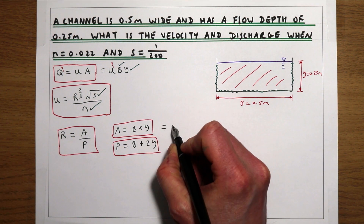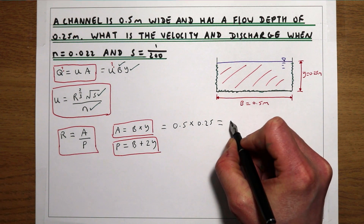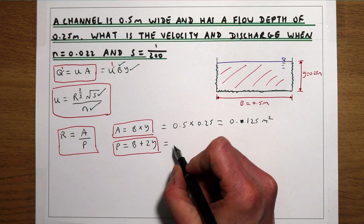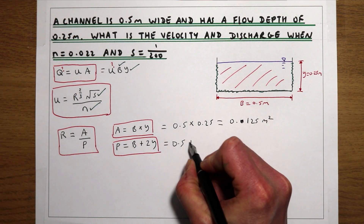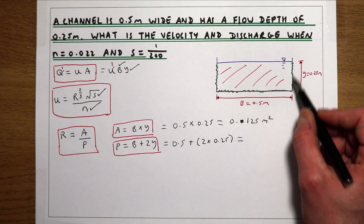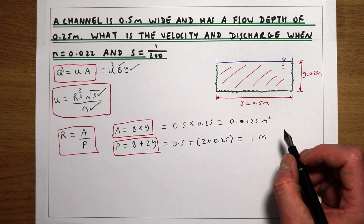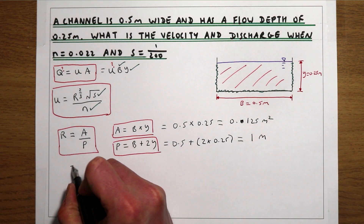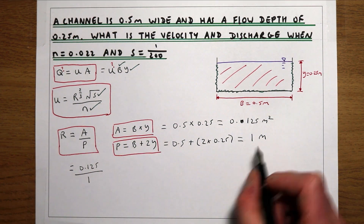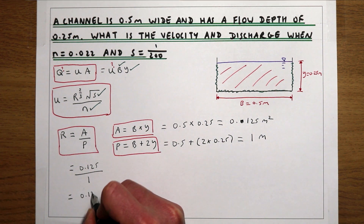The cross-sectional area is the width times the depth: 0.5 × 0.25 = 0.125 m². The wetted perimeter is B plus 2y: 0.5 plus 2 times 0.25, which gives a wetted perimeter of 1 metre. So the hydraulic radius R is 0.125 m² divided by 1 metre, giving R = 0.125 metres.